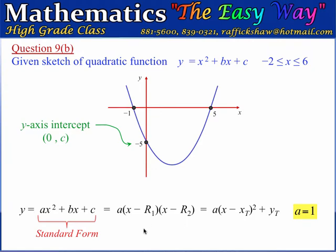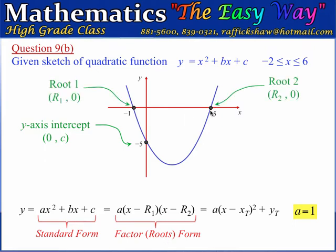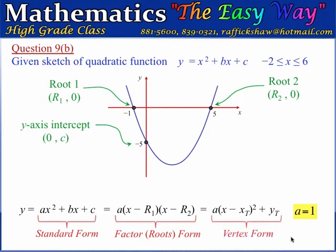The factor form is obtained by factorizing the standard form. It gives us information about the points where the graph intersects the x-axis, called the roots. r1 is the smaller root and r2 is the larger root. In this case, r1 equals negative 1 and r2 equals 5.